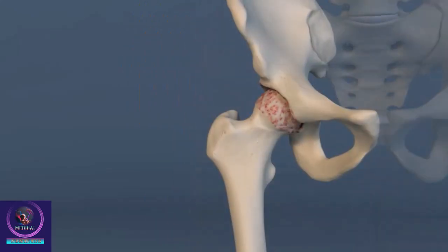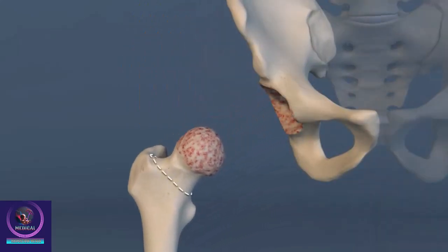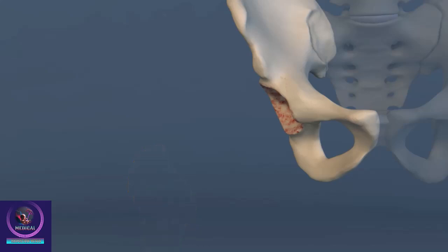The surgeon creates an incision to expose your hip joint. The damaged head of your femur is removed. The surgeon carefully removes damaged cartilage and bone from your hip socket.